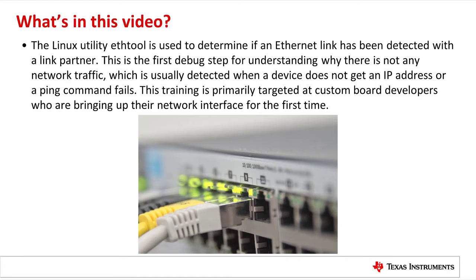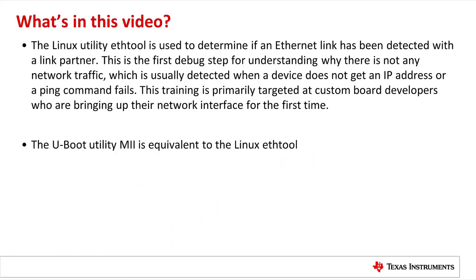In this video, we will use the Linux utility Eth Tool to look at whether an Ethernet link has been detected with a link partner. This is the first debug step for understanding why there is not any network traffic, which is usually detected when a device does not get an IP address or a ping command fails. This video is mostly targeted to custom board developers who are trying to bring up their network interfaces for the first time. Also in this video, we will look at the U-Boot utility MII tools, which is the equivalent of the Linux Eth Tool. A lot of the same information that Eth Tool provides is also going to be found with MII tools, such as link status, line mode duplex, and whether auto-negotiation completed.